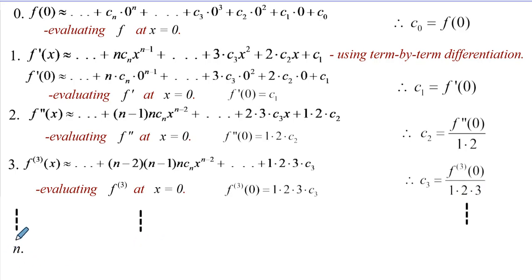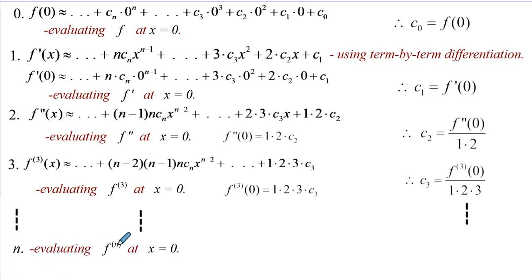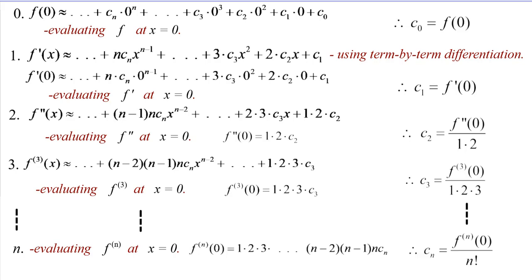Continuing this process up to n, we arrive at the general form of the coefficient. Evaluating the n-th order differential coefficient at 0 gives us the general coefficient: c_n equals f^(n)(0) divided by n factorial.